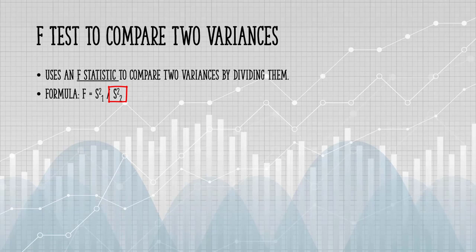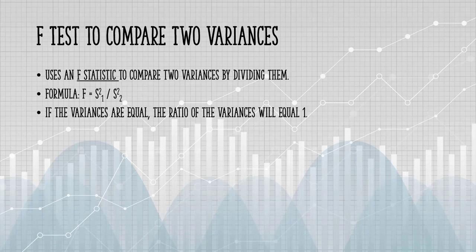If both variances are equal, the ratio of the variances will equal 1. For example, if you had two data sets and they both had a variance of 10, then 10 divided by 10 would equal 1.